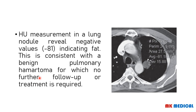Here's an example of how this can be applied. You have a mediastinal window with a mass showing -81 Hounsfield units. Whenever you have a negative value, it's less dense than water, so it's either air or fat. In this case, it's most likely fat, making this most likely a benign pulmonary hamartoma — which does not need further treatment or follow-up. This is how Hounsfield units can be used to determine what type of pathology you have on your CT scan.